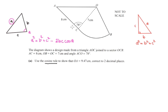Let's see then what our problem wants. It gives us the length of the side AC, CO, and the angle between them, angle C, which has 78 degrees. And the question is, use the cosine rule to show that OA is equal to 9.47 cm correct to two decimal places.